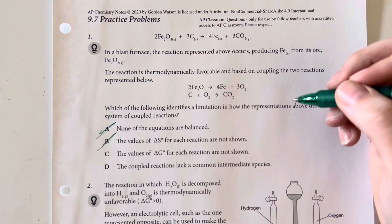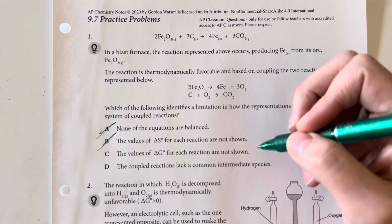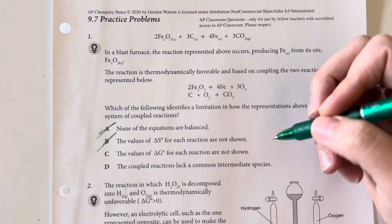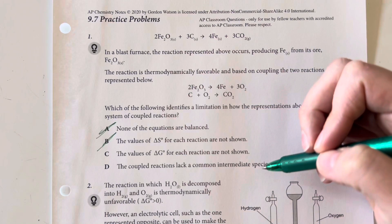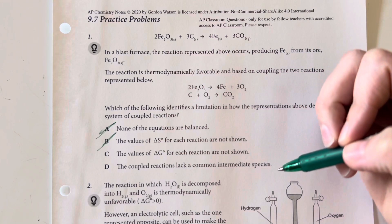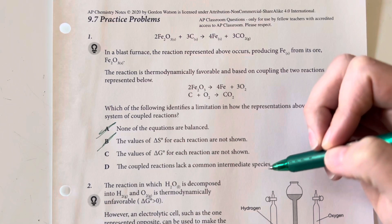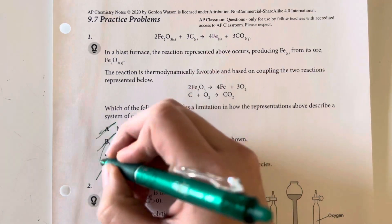And then we have the values for delta G for the reaction are not shown. That is going to be more of a problem for us with this coupled reaction. And D says that the coupled reaction lacks a common intermediate species, that is not going to be our problem.